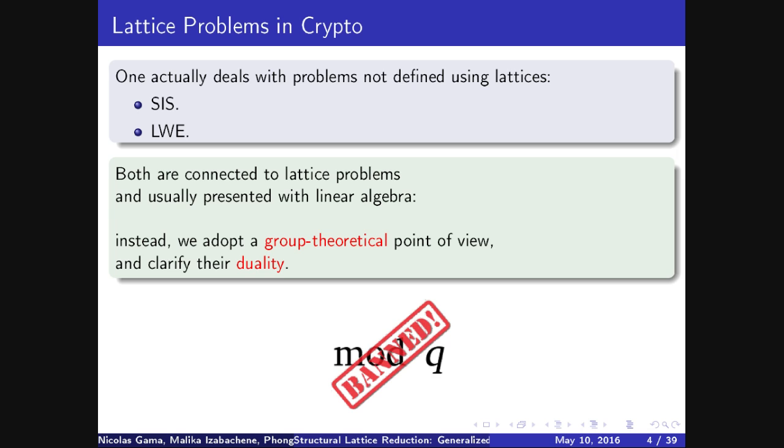So in general, when we talk about lattice-based crypto, we rely on the two problems, SIS and LWE. They are, in general, defined using huge matrices presented with linear algebra, and they use a lot of parameters, some of them meaningless, like for example, the parameter Q. So for that reason, it has been banned from my talk, and instead, I will adopt a group theoretical point of view, and which will emphasize the duality between the two problems.